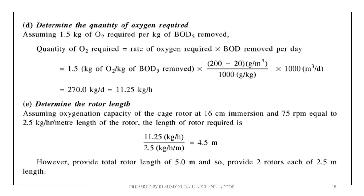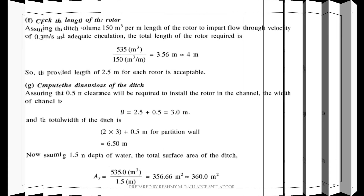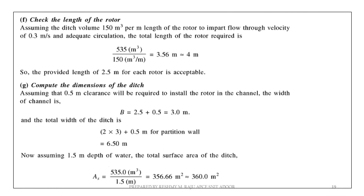Assume the quantity of oxygen required is 1.5 kg per kg of BOD₅ removed. Next, determine the rotor length. Assume oxygen capacity of the rotor is 2.5 kg per hour per meter length. The required rotor length works out to approximately 4.5 meters, so provide 5 meters. Providing 2 rotors of 2.5 meter length each.